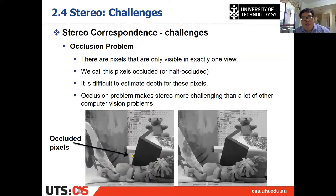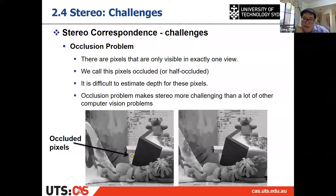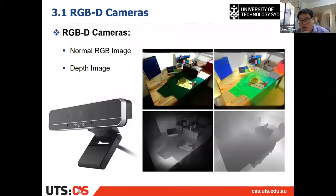Another challenge is occlusion: sometimes a feature is visible in one image but not the other because of different viewing angles. In that case, you can't recover the 3D location of that feature. This is another reason we have RGB-D cameras.